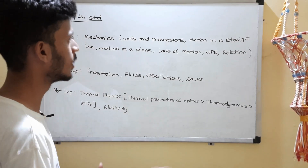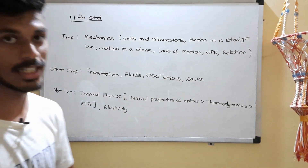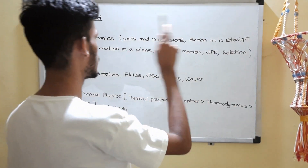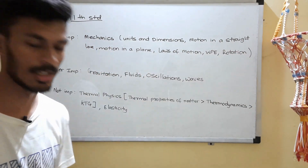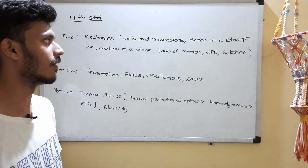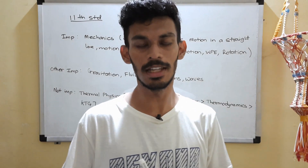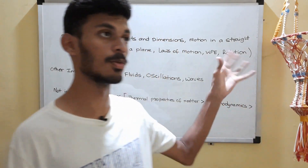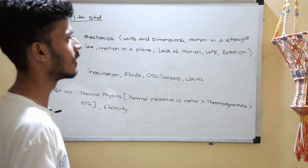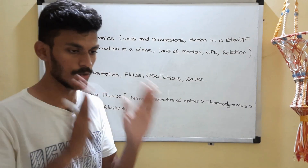In the important category, we have the mechanics section with six chapters — chapters one to six: units and dimensions, motion in a straight line, motion in a plane, laws of motion, work power energy, and rotational motion. If you see question papers from 2010 to 2020, the weightage is quite uniform among these chapters, with one or two questions from each topic in every BITSAT paper. These are topics you should solely focus on and should not think of skipping.